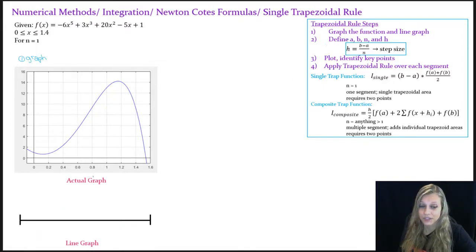The next thing I need to do is define a, b, n, and h. So a is my lower bound of integration, and in this case it's zero.